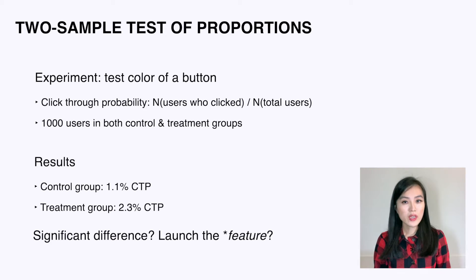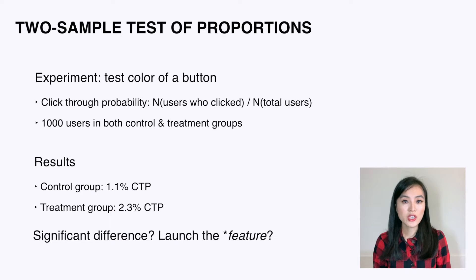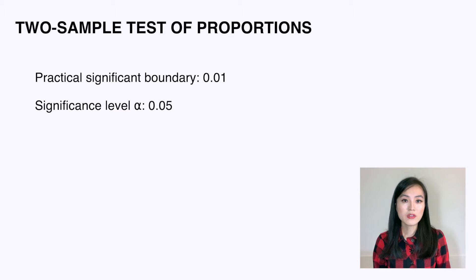Can we conclude there's a significant difference between these two groups? Would you recommend launching the experiment? The practical significance boundary is 0.01 and we choose an alpha of 0.05.